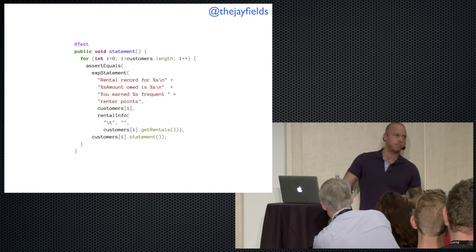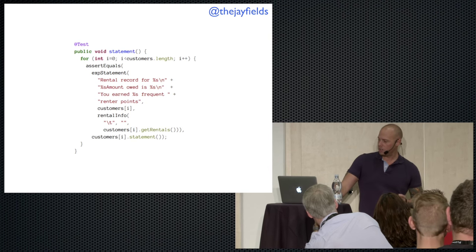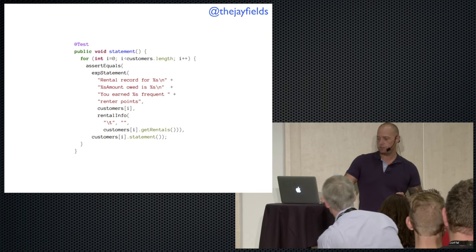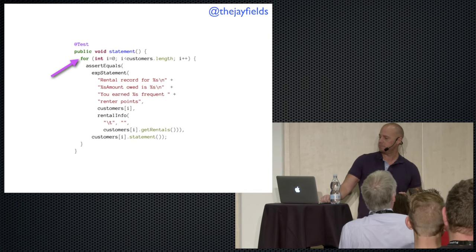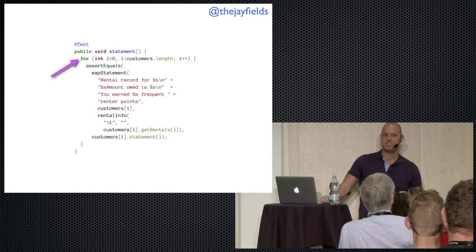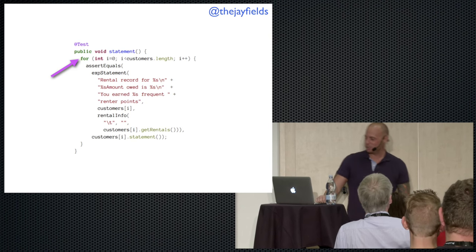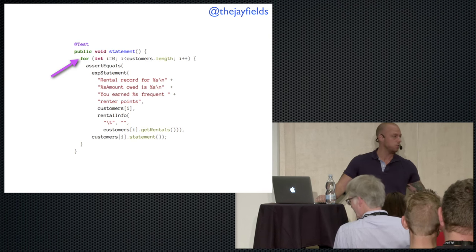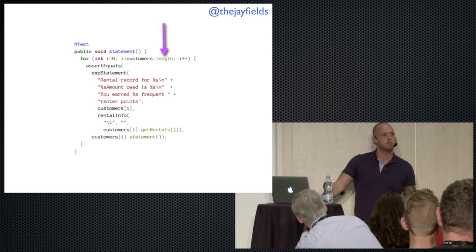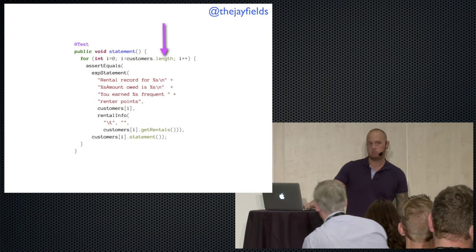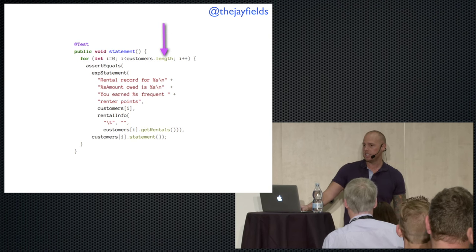Bob left you this failing test — the statement method. This test isn't very long, maybe half a dozen lines of code, and yet there's way too much going on here. Specifically, Bob decided we need a loop in our tests. We need to figure out what's wrong with this test, what terminates this loop. Pretty simple — length. But what's 'customers'? Nowhere on the slide, nowhere on your screen, can you find what customers is. If you're lucky, you're working with an IDE that helps you get there. But you need an IDE just to read the first line of a failing test that you didn't write.